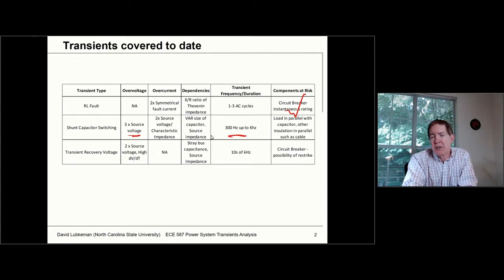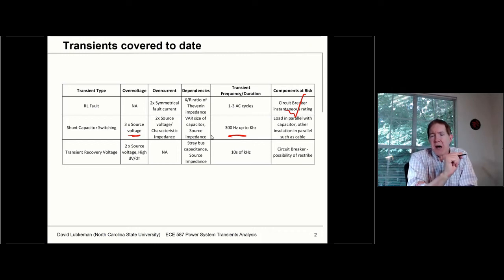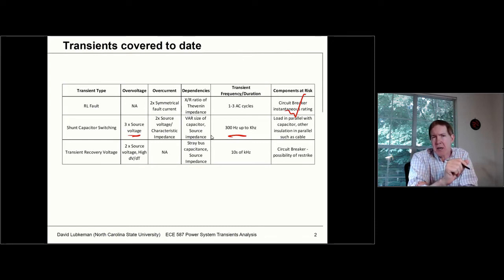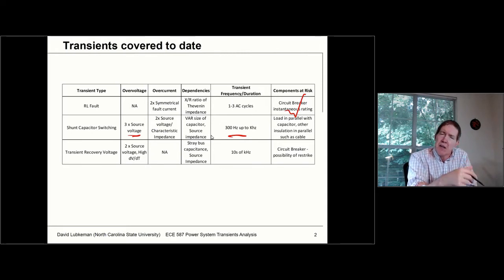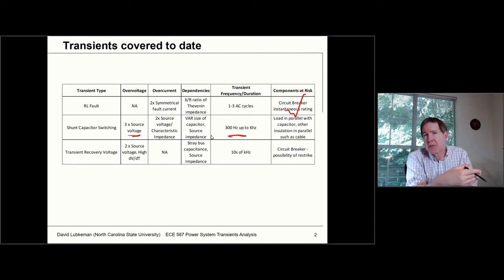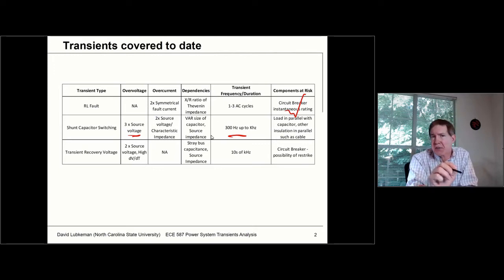The frequencies associated with capacitor switching are relatively low compared to other transients that can occur — maybe as low as 300 Hz up into the kilohertz region. What we'd be concerned about is what kind of power quality implications it would have for loads in parallel with this, because some loads would be sensitive to these overvoltages. For example, if we had cable in parallel, that cable is going to get stressed a little bit more.